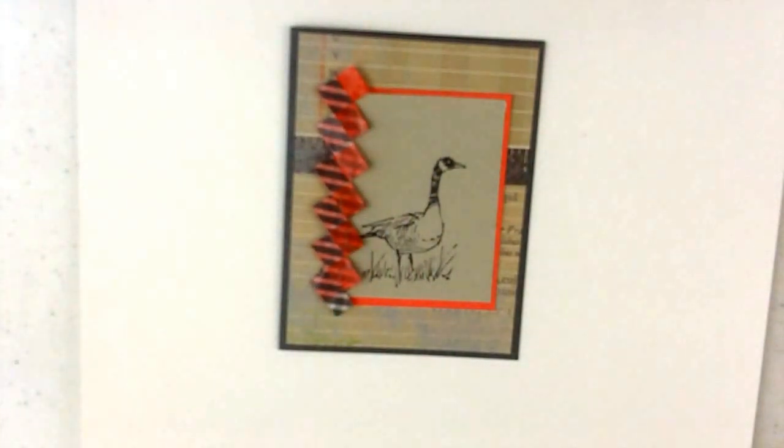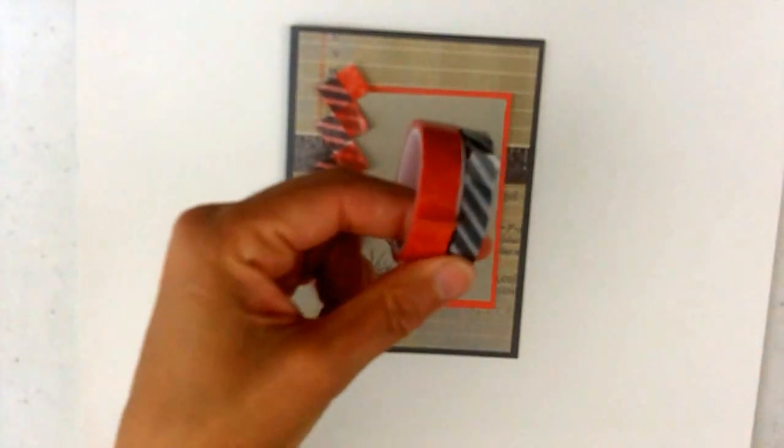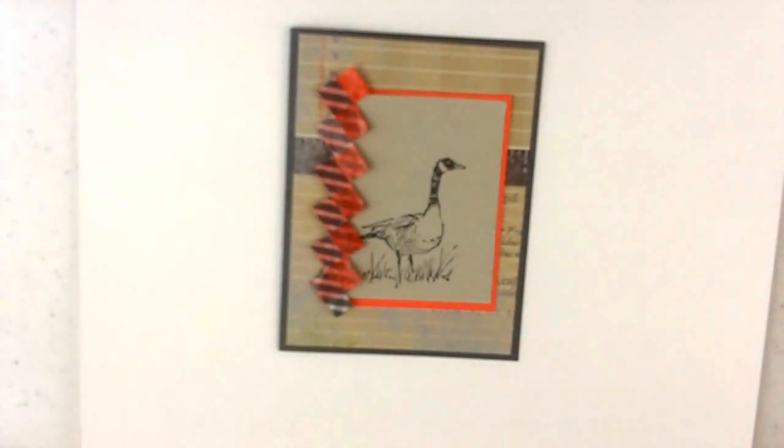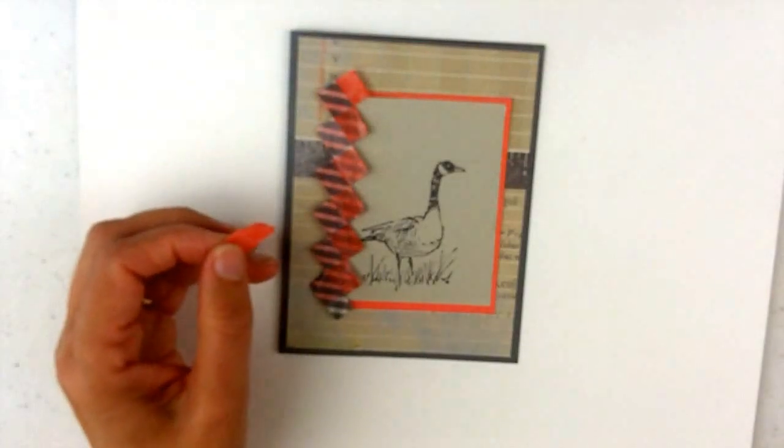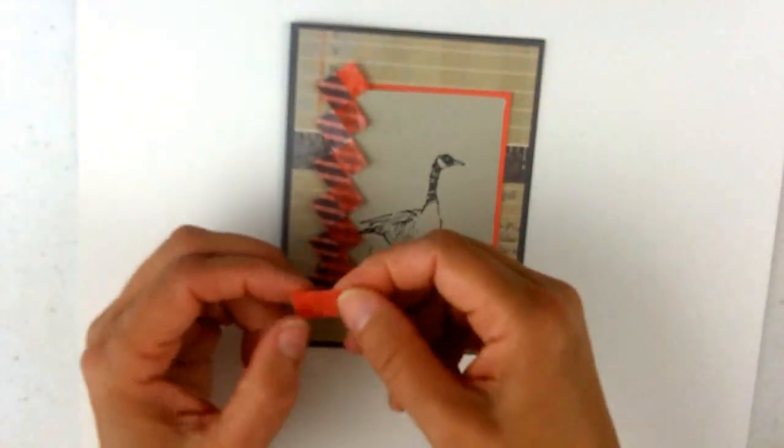So to do this I took the This and That washi tape also and I just picked these two colors. I pre-cut a bunch of two-inch strips and I have them just attached to the side of my table, or you could put them on a clipboard so they're just easy to pick up.